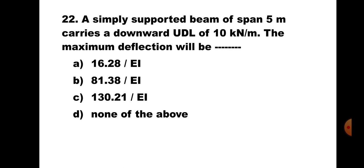Question number 22. A simply supported beam of span 5m carries a downward UDL of 10kN/m. The maximum deflection will be: A. 16.28/EI, B. 81.38/EI, C. 130.21/EI, D. None of the above. This is a simply supported beam carrying a UDL on the entire span. The standard formula for maximum deflection is 5WL⁴/384EI. Putting all the values, you will get the answer as 81.38/EI. Hence, the correct answer is B. 81.38/EI.